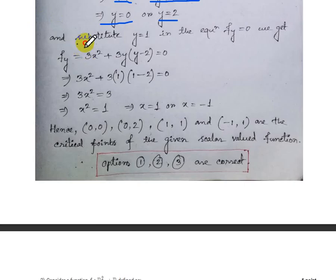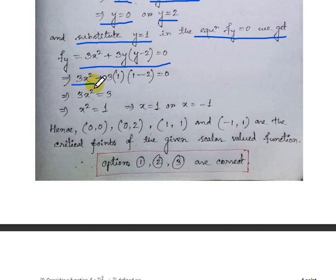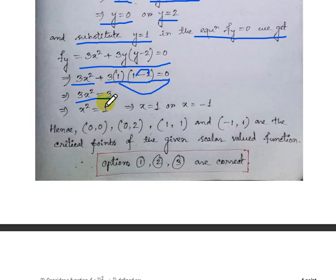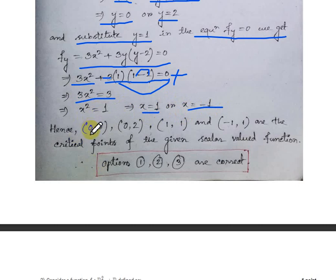Now substituting y = 1 into fy = 0: we get 3x² + 3(1)(1 - 2) = 0, so 3x² - 3 = 0, giving x² = 1. Taking the square root, x = ±1. This gives the critical points (1, 1) and (-1, 1).